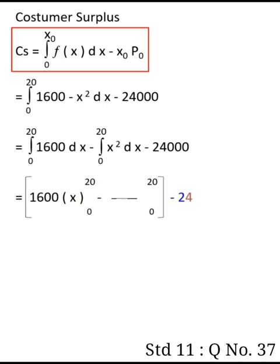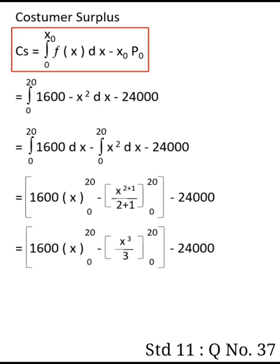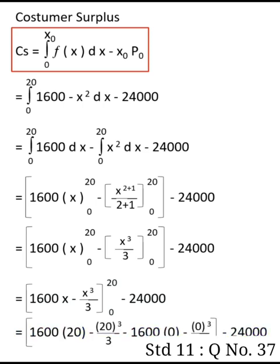Evaluating the integral: 1600x minus x cubed divided by 3, from 0 to 20. Substituting upper limit minus lower limit: 1600 times 20 minus 20 cubed divided by 3 minus the lower limit at 0, which is 0.